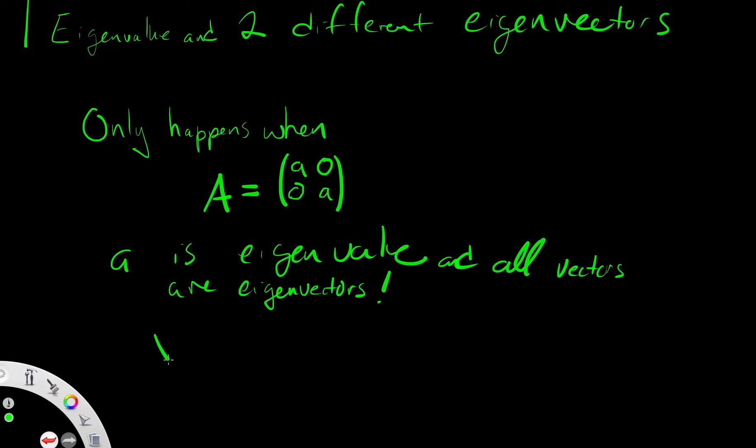In that case our solutions will look like this. Y is going to look like some constant k1 times e to the AT, where that A is the same A in the matrix, times the vector (1,0), plus k2 times e to the AT times the vector (0,1).